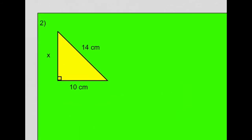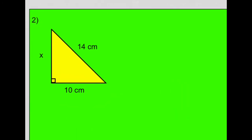So number two, we have another right triangle. Let's find where the hypotenuse is. Here's your right angle. And the hypotenuse is going to be opposite to that. We know the hypotenuse this time, the hypotenuse is 14 centimeters. What we're missing is the length of one of the legs.